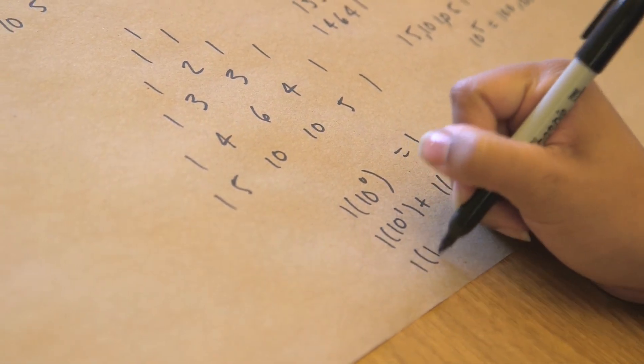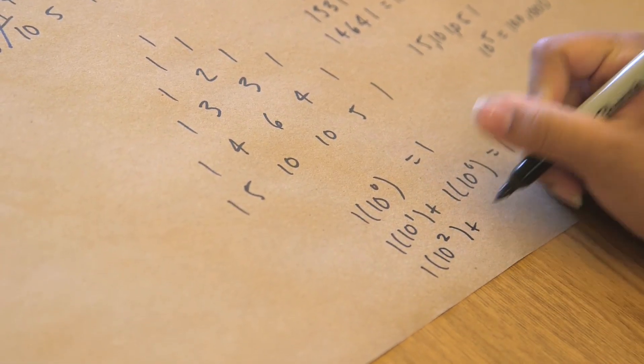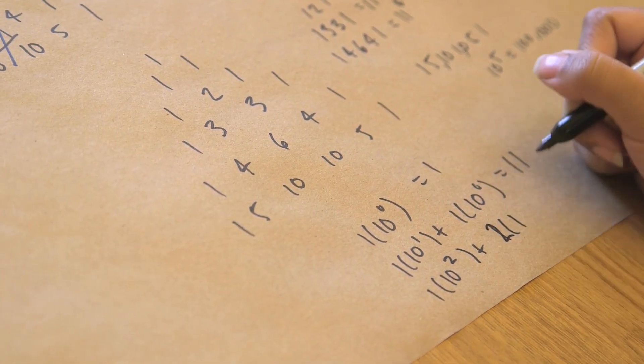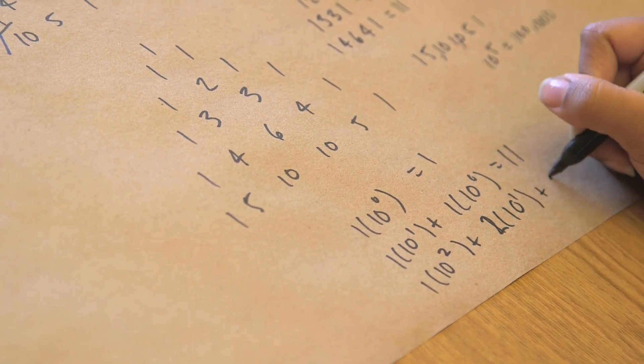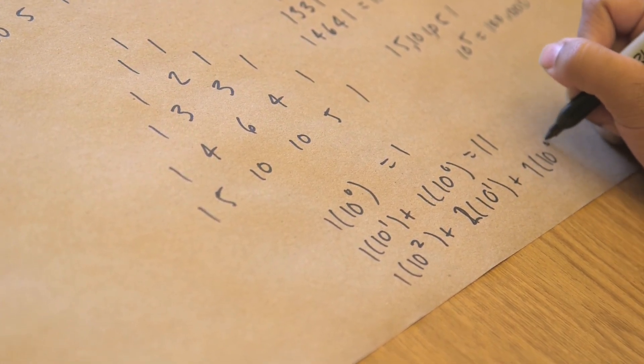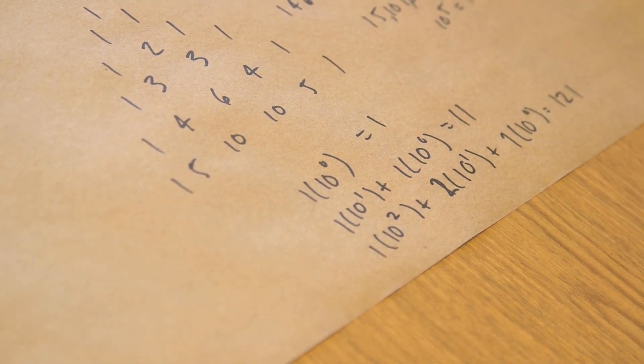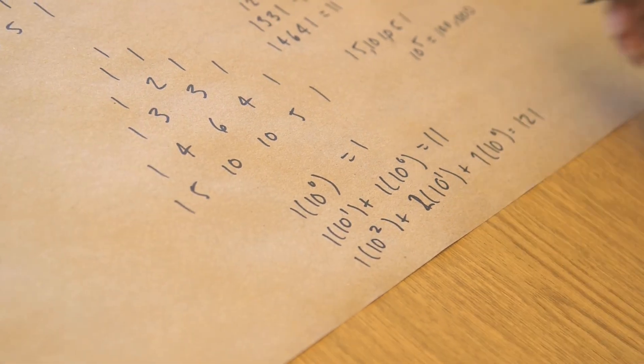Let's do one times ten squared plus two times ten to the one plus one times ten to the zero, that's 121. So let's skip on down to our friend here.